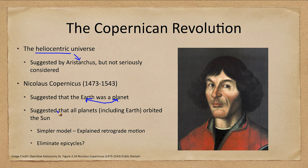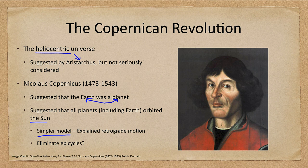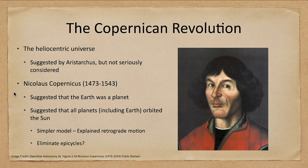What Copernicus suggested was that all planets, including Earth, orbited the sun. In a way it was a very simple model — it explained retrograde motion in a much simpler way and did not need those complex epicycles. However, he was not able to completely eliminate epicycles because while he put the sun at the center, he still relied on circular orbits.